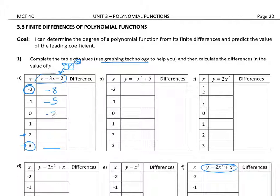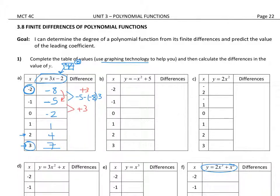I'm going to work through this one and remind you what we mean by differences. To find your difference, we look at the y-coordinates, pair them up, take the one on the bottom and subtract the one above it. So negative five take away negative eight is positive three — our first difference is three. Another way to think of it: going from negative eight to negative five, you have to go up three, you're increasing by three. Then from negative five to negative two, again increasing by three. Calculate your differences; if you get a constant difference, you're done.